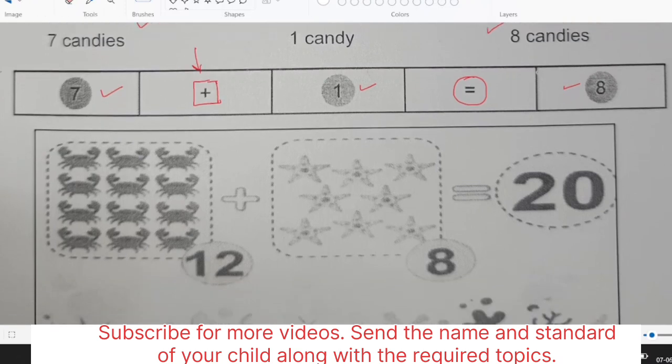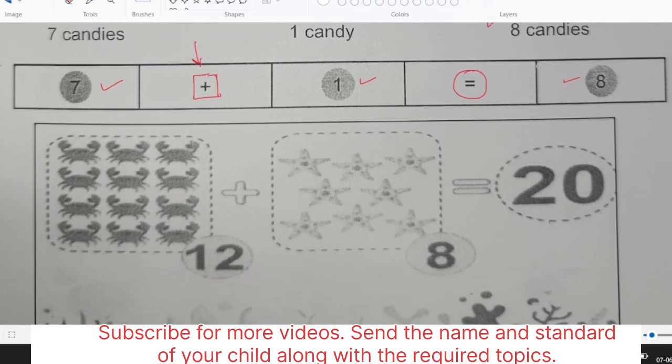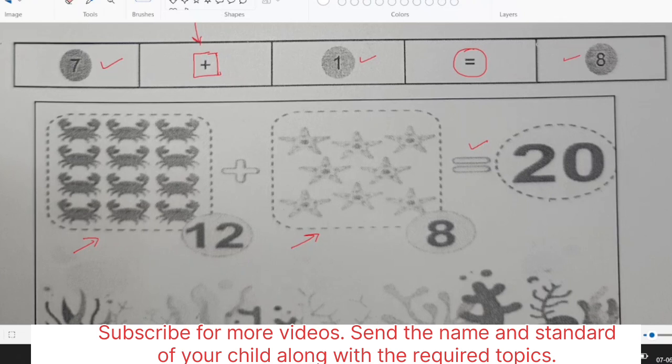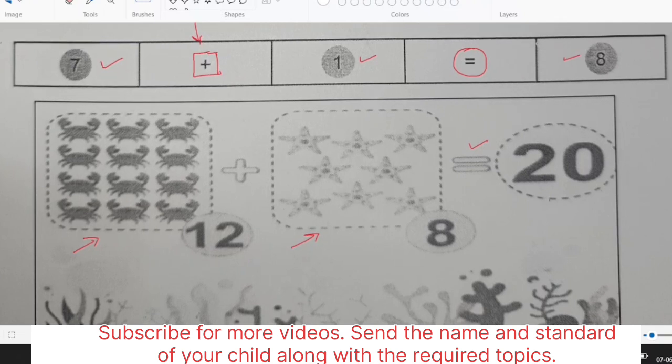So taking in one more example, can you see the crabs are here and the stars are here. 12 plus 8 is equal to 20. So child should be able to understand that we are counting them all together.